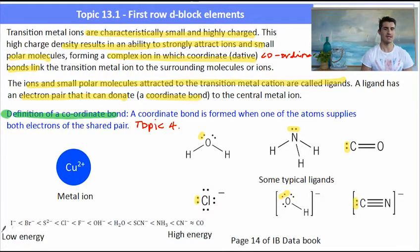So here we have some typical ligands and they all have lone pairs that they could donate to a metal ion. Some of them are charged and some of them are uncharged. In the data booklet it gives you a series of all the different types of ligands you could expect. Iodine is a low energy ligand and cyanide is a high energy ligand which we'll talk about later.